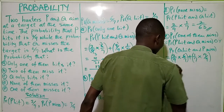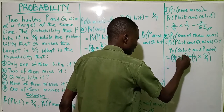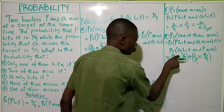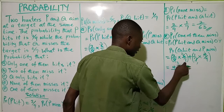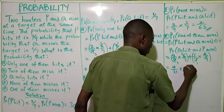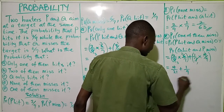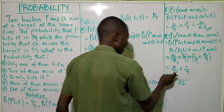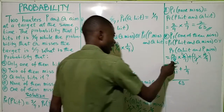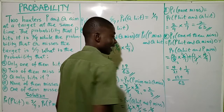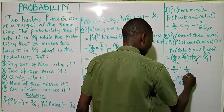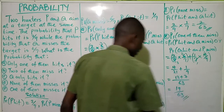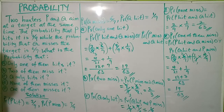Simplifying: 3 cancels giving 2 over 21, plus 1 over 9. The LCM of 21 and 9 is 63. 63 divided by 21 is 3, times 4 is 12. Plus 63 divided by 9 is 7, times 1 is 7. That equals 12 plus 7, which is 19 over 63. So the probability that one of them misses the target is 19 over 63.